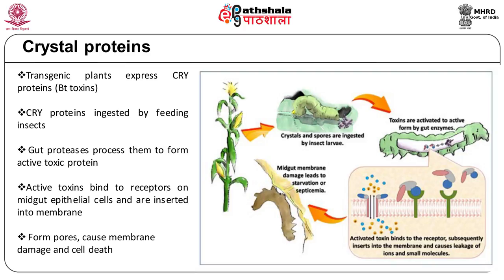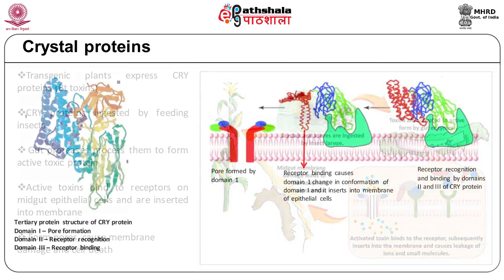The active toxin binds to a receptor on midgut epithelial cells and forms pores in the epithelial membrane, leading to cell death through osmotic lysis. The core toxic fragments of cry proteins have three domains. Domain one functions in pore and ion channel formation. Domain two is involved in receptor recognition, while domain three is involved in receptor binding. When the protein binds to the receptor, domain one is inserted into the membrane and forms the pore, which acts as an ion channel causing an influx of ions.